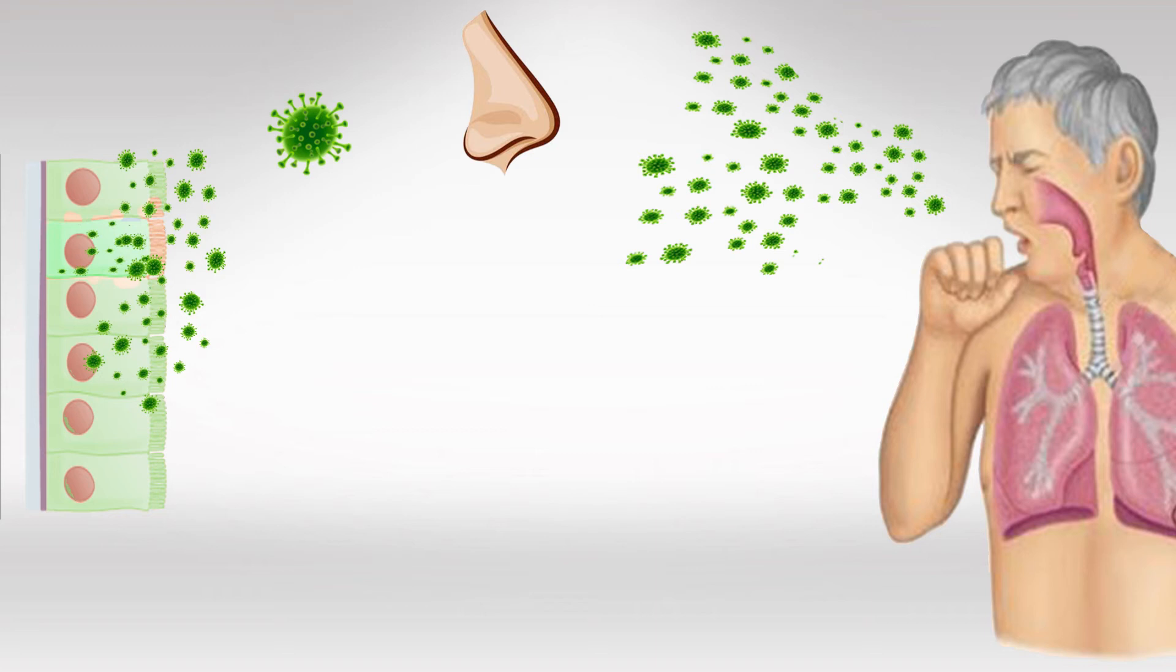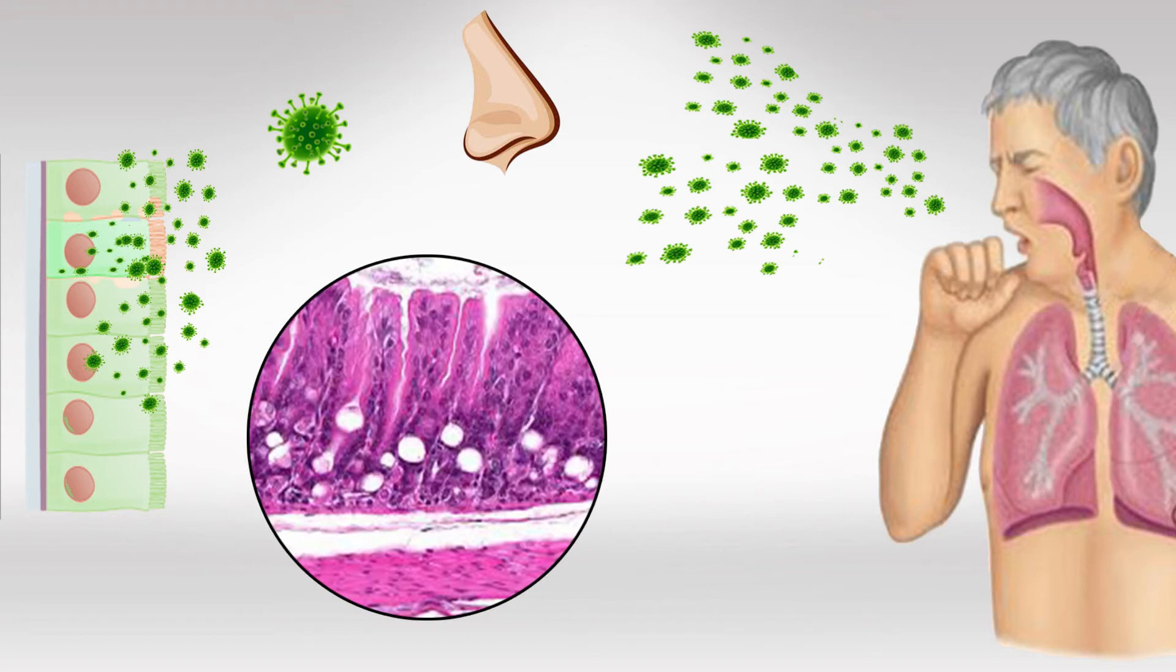If we take a sample of an infected epithelial tissue, we'll see epithelial cells with damaged cilia and intracellular vacuoles and syncytia. These characteristics are the hallmark of the virus.